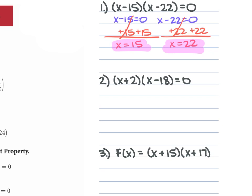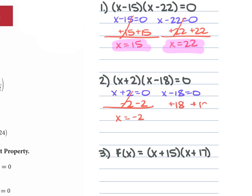For problem 2, we're given (x + 2)(x − 18) = 0. So x + 2 = 0 and x − 18 = 0. We subtract 2 from each side and get x = −2, and then we add 18 to both sides and x = 18.